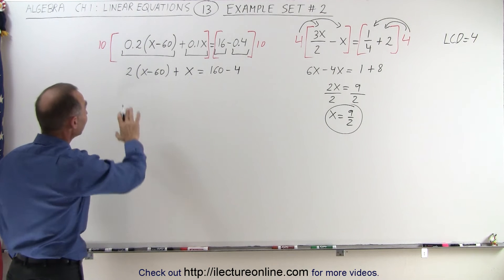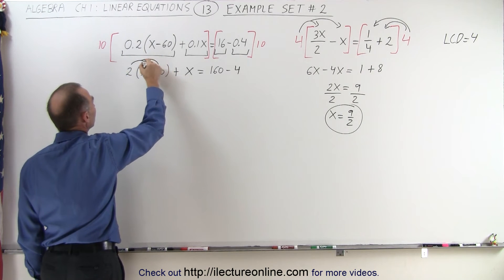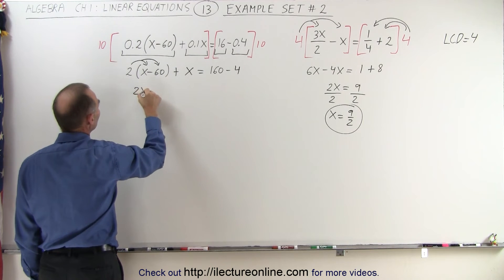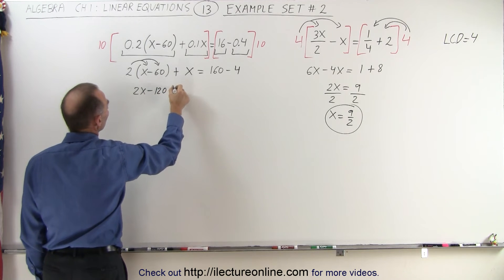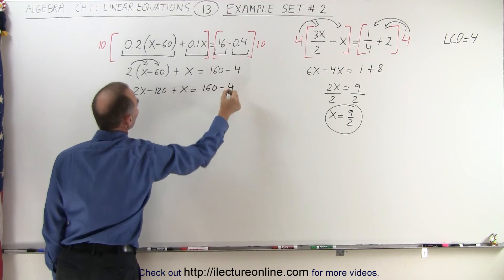Now, I can go ahead and take care of the parentheses. I'm going to multiply the 2 times the 2 quantities inside the parentheses, so 2 times x is 2x, and 2 times the negative 60 is minus 120, plus x is equal to 160 minus 4.